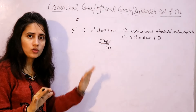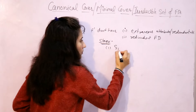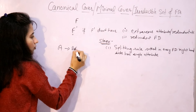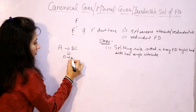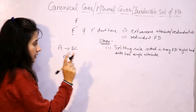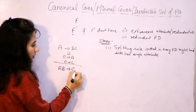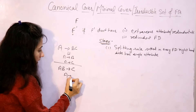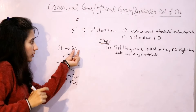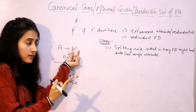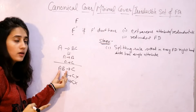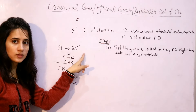I hope everybody knows we have discussed all the Armstrong axioms. What is the splitting rule? If A → BC is given, you can write A → B and A → C. But if AB → C is given, you cannot write only A → C or only B → C — that is wrong. You can only split the right-hand side, the dependent. You cannot split the left-hand side.